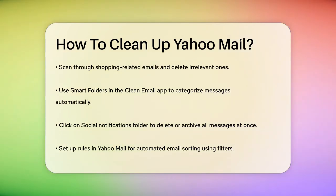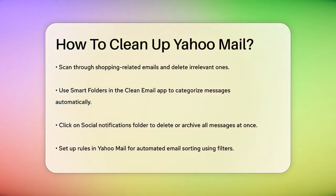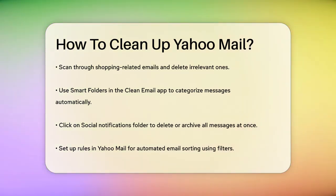Setting up rules in Yahoo Mail is also a great way to maintain a clean inbox. You can automate email sorting using filters. Sign into your Yahoo account via a browser, navigate to the Settings gear icon, select More Settings, and then click on Filters. Here, you can define criteria for incoming messages, such as emails from a particular sender or with specific keywords in the subject, and specify the action you want Yahoo to take when an email matches your criteria.